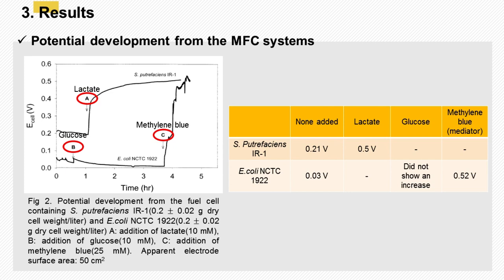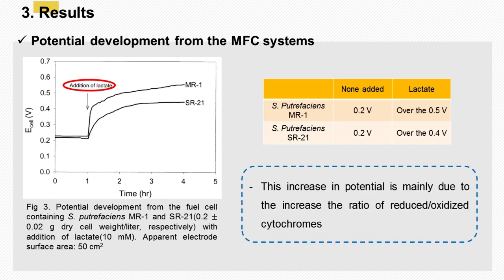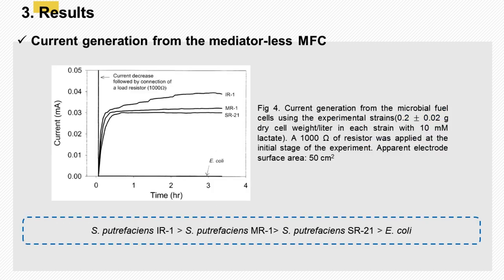However, when an electrochemical mediator, methylene blue, was added to the fuel cell containing E. coli, an increase in potential up to 0.52 volt was observed. Similar experiments were carried out using cell suspensions of the wild-type and mutant strains of S. putrefaciens. As shown in Figure 3, before the addition of fuel, about 0.2 volt of potential was observed. However, when the fuel was added, a rapid increase in potential was observed. This increase in potential is mainly due to the increase in the ratio of reduced/oxidized cytochromes. The mediator-less MFC were prepared using S. putrefaciens strains and fed with lactate. Figure 4 shows the current generation patterns of the fuel cells using different S. putrefaciens strains. The fuel cell containing IR-1 produced the highest current. The strain MR-1 produced lower currents than IR-1, and the mutant strain STR-21 produced the lowest current.